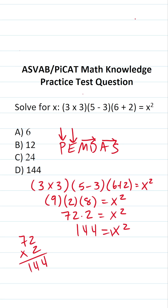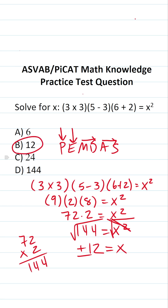To get x by itself, we're going to take the square root of both sides. The square root and the square cancel each other out, so this just becomes x. The square root of 144 is 12. Technically the answer is plus or minus 12, but since we only have positive 12 as an answer choice, we know x is going to be 12.